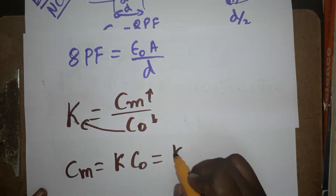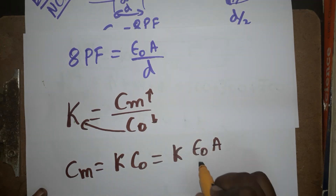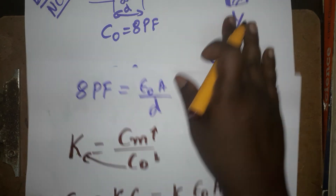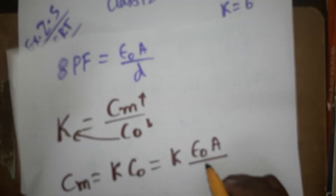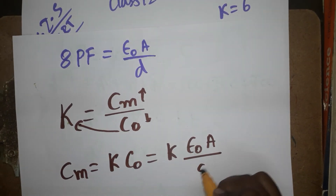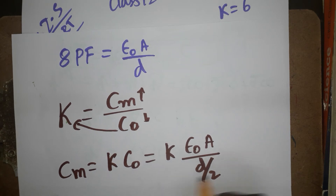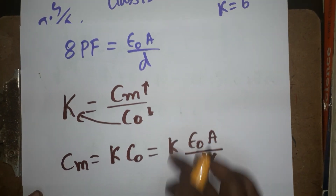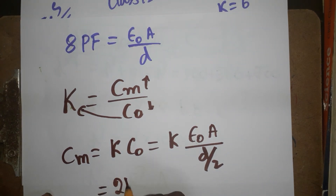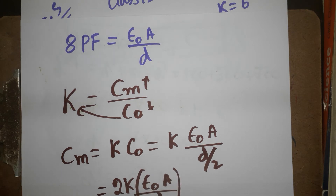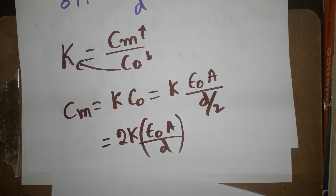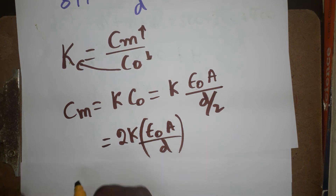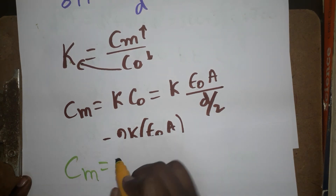Since C₀ = ε₀A/d, and the distance is now reduced to half, the new distance is d/2. So the 2 goes to the numerator, giving C_m = 2kε₀A/d. We already know ε₀A/d equals 8 picofarad, and k is given as 6.